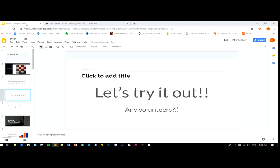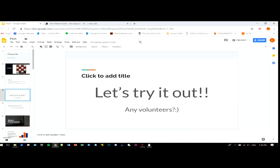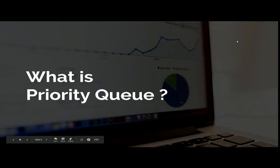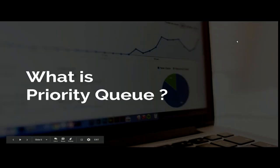The algorithm used behind this 15th puzzle is actually called the Priority Queue Algorithm. So what is Priority Queue? Priority Queue is an abstract data type, which is like a regular queue, but in this case there is a priority associated with each particular element. This Priority Queue only supports comparable data, so it must be ordered in some way so that the relative priority can be assigned.